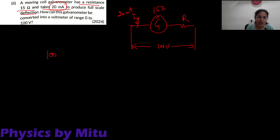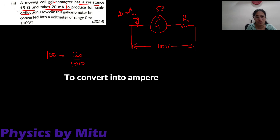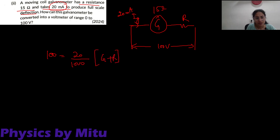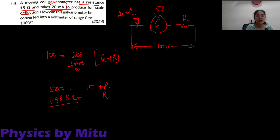Apply Ohm's law: 100 is equal to (20/1000) into (G + R). This gives 5000 is equal to 15 plus R. So R is equal to 4985 ohm. This is the resistance which should be connected in series with the galvanometer.